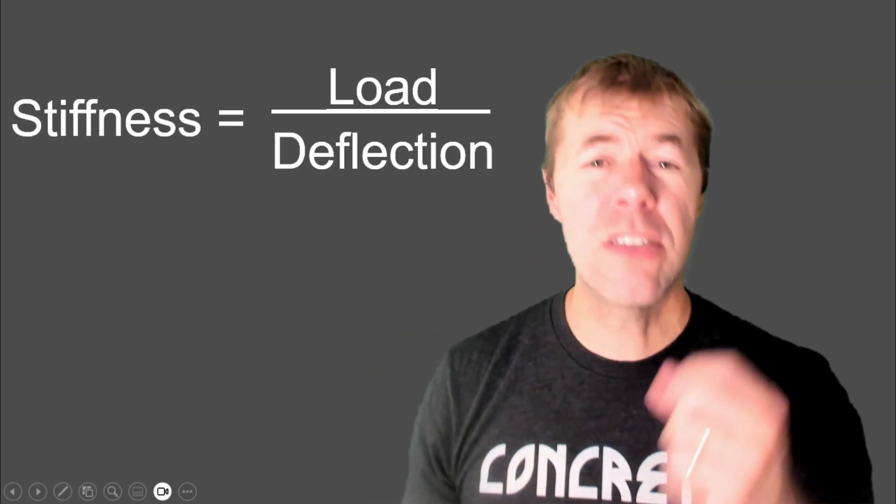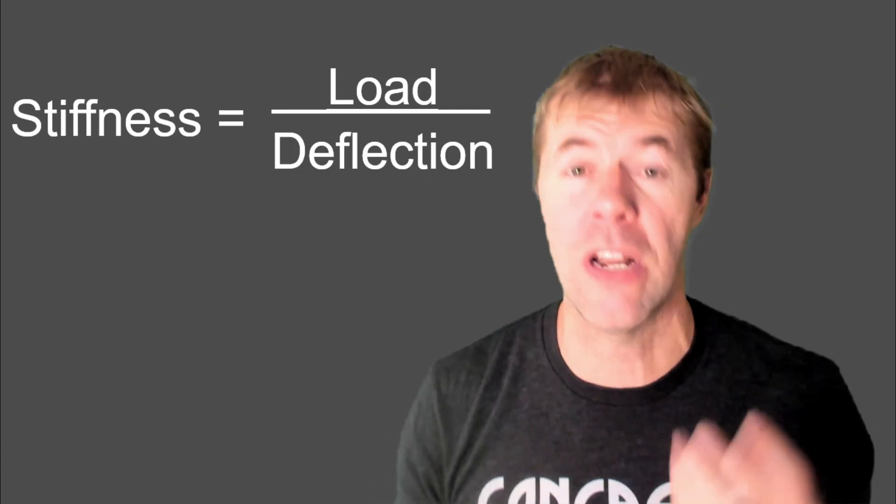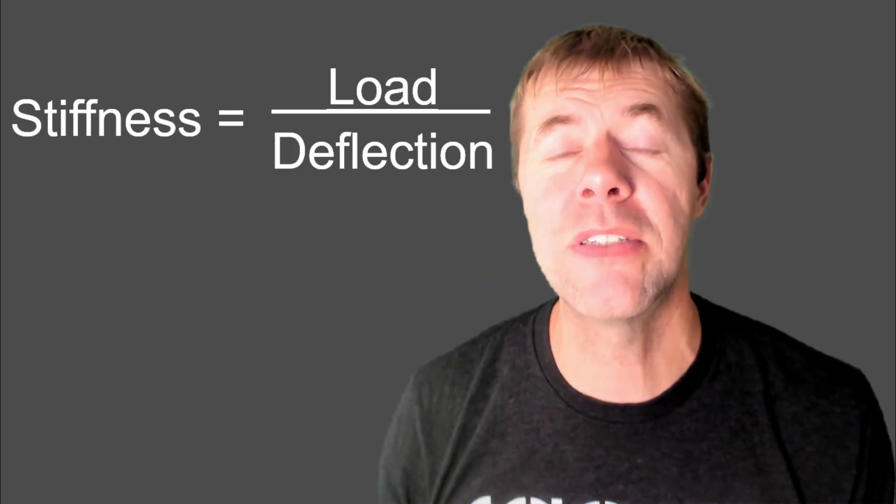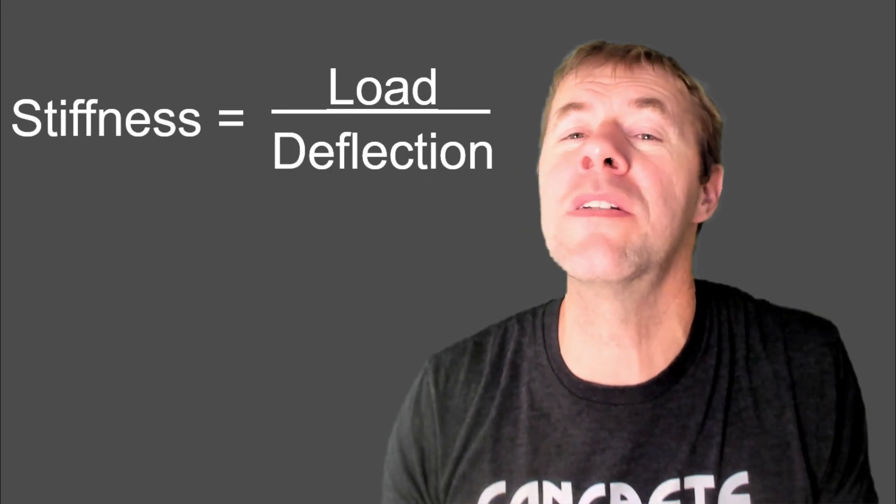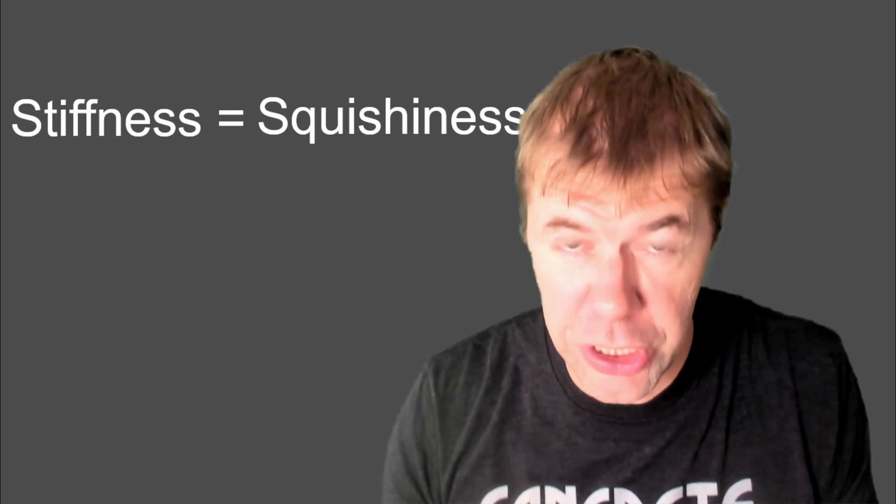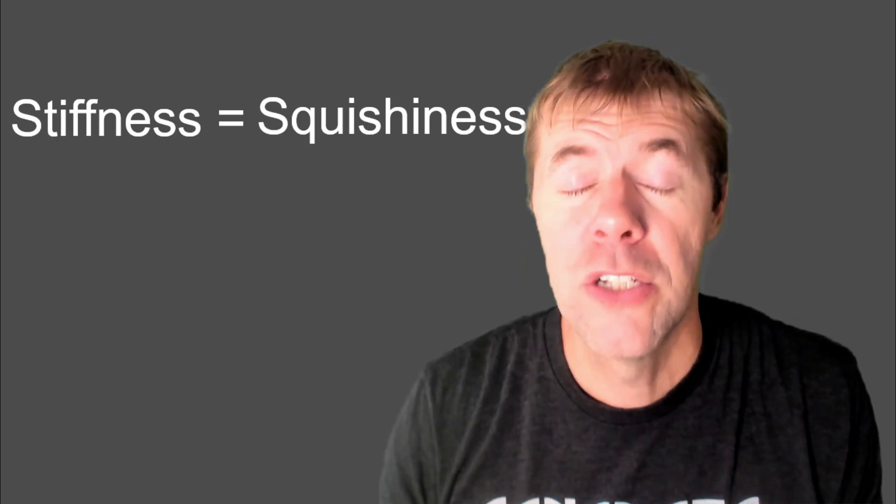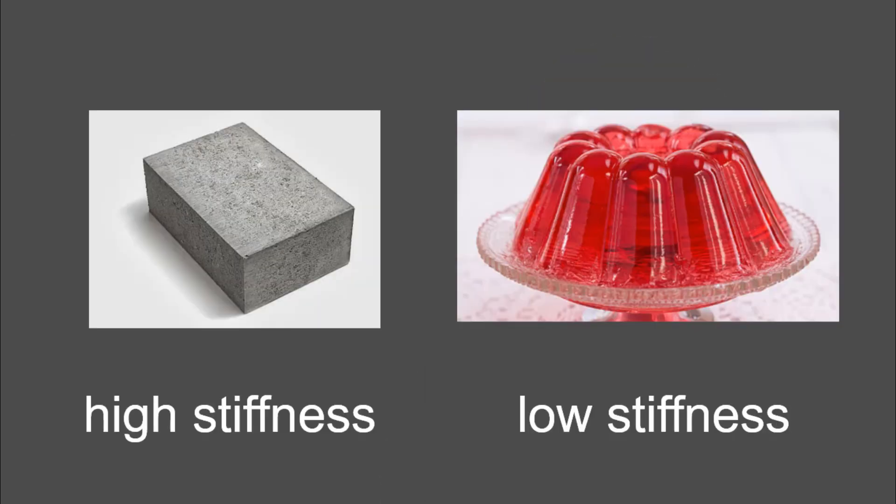So stiffness is the load divided by the deflection. That is the mathematical way to describe stiffness. But there are other ways as well, like stiffness is also equal to how squishy something is. Yes, squishy. So we would say this concrete block here on the left has a very high stiffness, or it's not very squishy. And something that's like jello on the right would have a low stiffness or something that is extremely squishy. I know you got it now.